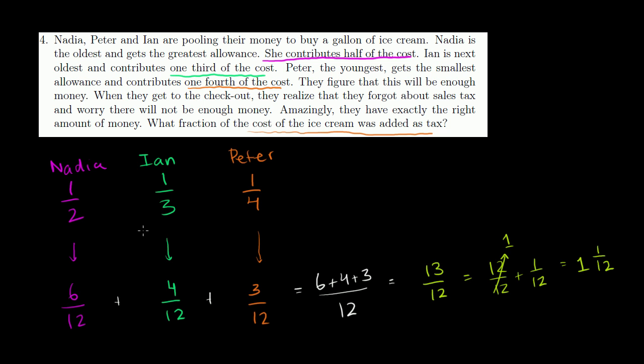So when they pool their money, they get 1 and 1/12 of the price of the ice cream that they want to buy. So they say, what fraction of the cost of ice cream was added as tax? This is the exact amount that they needed to pay. So clearly, 1 is the non-taxed price of the ice cream. So this 1/12 was the amount added as tax. So the answer to the question is 1/12 of the price was added as tax.